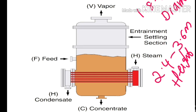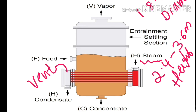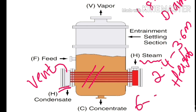The steam compartment contains a steam inlet on one side and a vent on the other side — the vent is for removing non-condensed gas. A condensate outlet is also present in the steam compartment, mainly for removing the condensed steam. The steam compartment contains 6 to 8 stainless steel horizontal tubes.